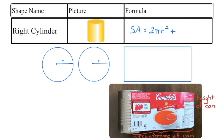The cylinder is made up of two circles, and we know the area of a circle is pi r squared. Because there are two of them, we double that area. In terms of the rectangle we get when we unravel the soup label on the can, the base of the rectangle is the circumference of the can — which is 2 pi r. The height of the rectangle is the height of the can, so we multiply base times height to get 2 pi r times height.